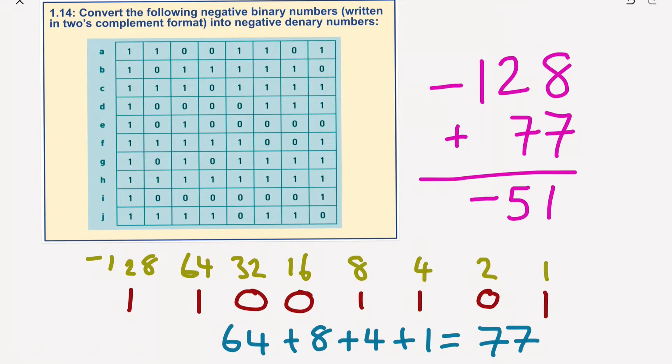Minus 128 plus 77 would give us an answer of negative 51. So basically I added that number to this one here. I'll pop this in, negative 51.